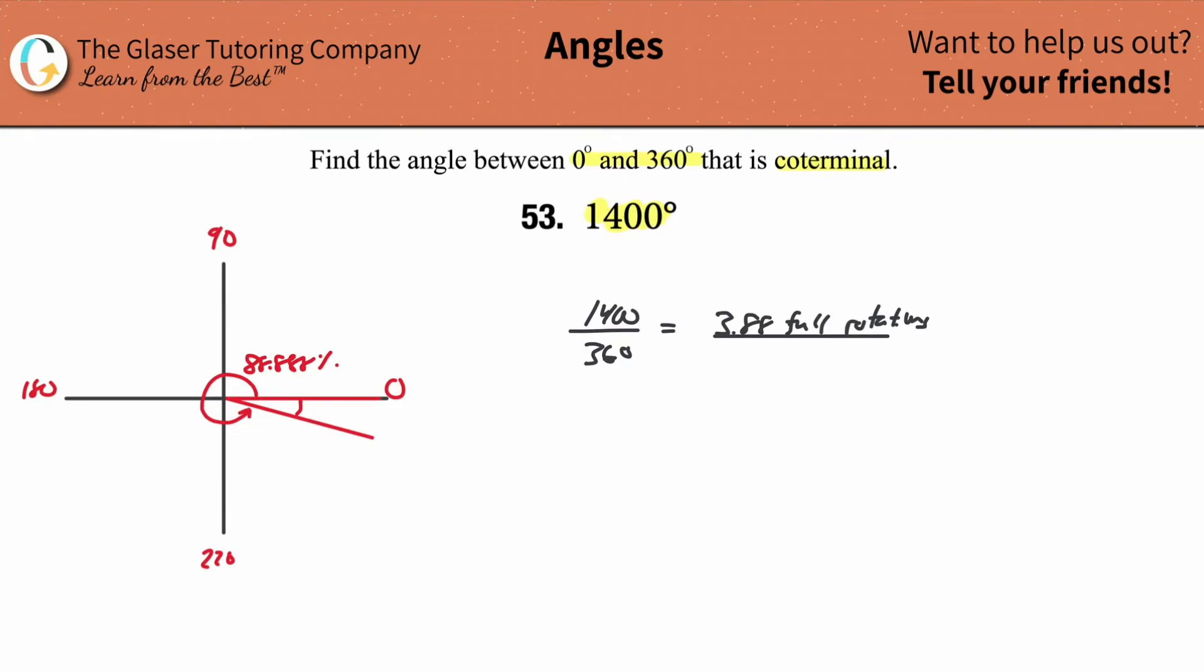That means this little piece in here represents what percent of a full rotation then? Or what percent is left? Just take 100 and subtract it by 88.8888. That means it's 11.1111%.